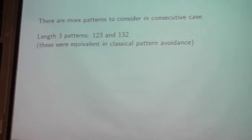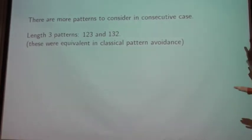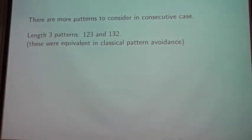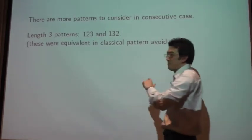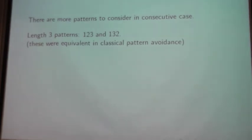So, when r is equal to zero, and so for the classical case, I'm just going to only talk about the avoidance. So, for the classical avoidance, yeah, both the one, two, three, and the one, three, two are counted by the Catalan numbers. But here, it's just two.